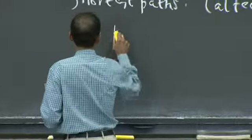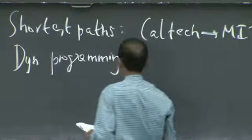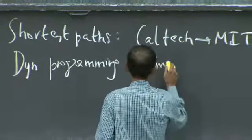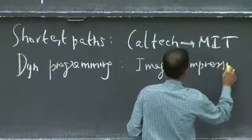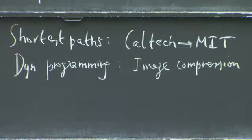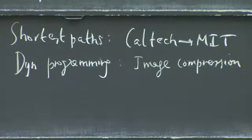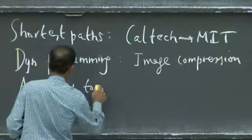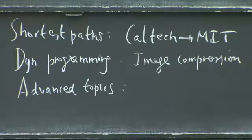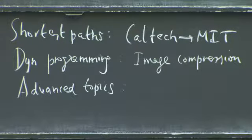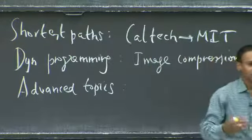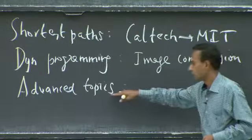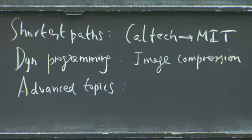Dynamic programming is an important algorithm design technique used in many problems — it can be used for things like image compression, reducing the number of pixels while preserving the image's appearance. Finally, we'll cover advanced topics: complexity theory and research in algorithms. Hopefully by that point you'll be sold on algorithms, and we'll give you a sense of what else is out there — we're just scratching the surface in this class.